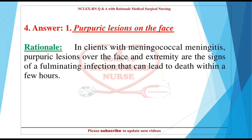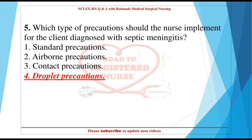Answer: 1. Purpuric lesions on the face. Rationale: In clients with meningococcal meningitis, purpuric lesions over the face and extremities are signs of a fulminating infection that can lead to death within a few hours.